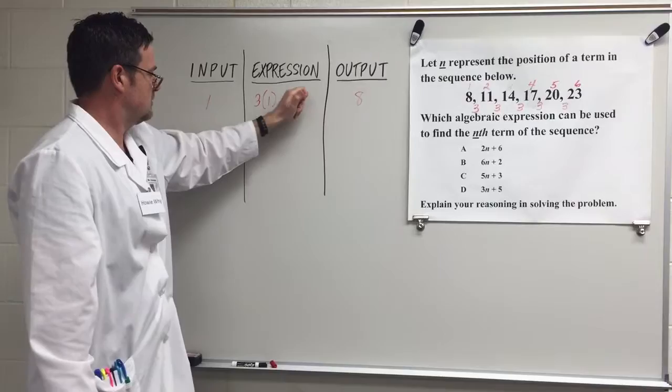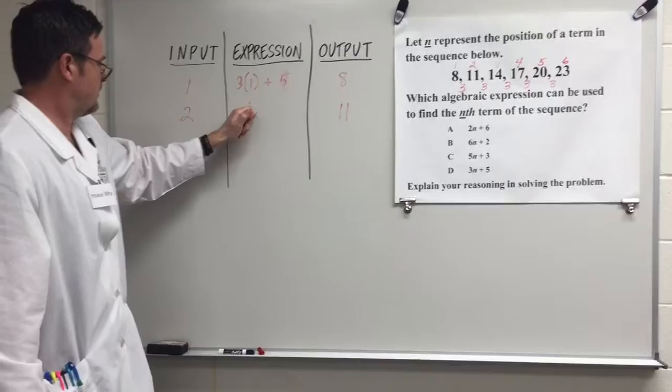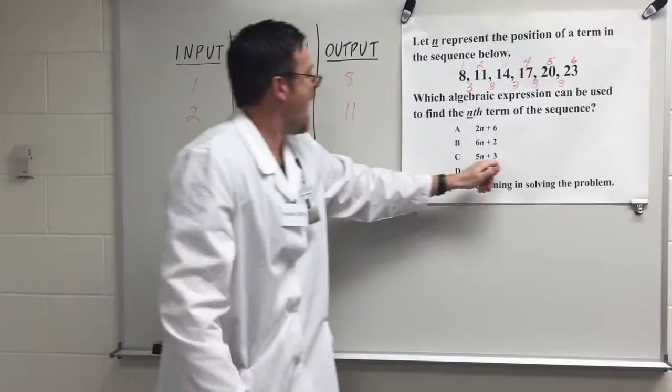Let's see if it works for the second term. My second term is 11. There's my input, there's my output. Does 3 times 2 plus 5 equal 11? Absolutely positivity. Look at this answer right there. I can tell it's D, 3N plus 5.